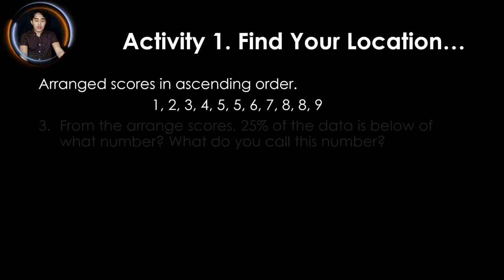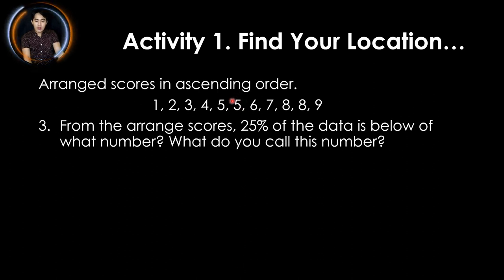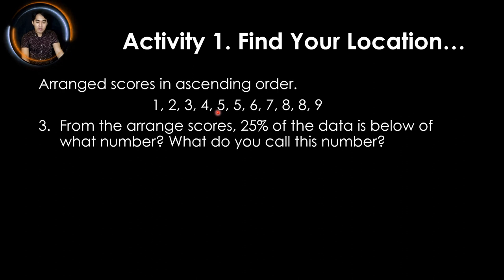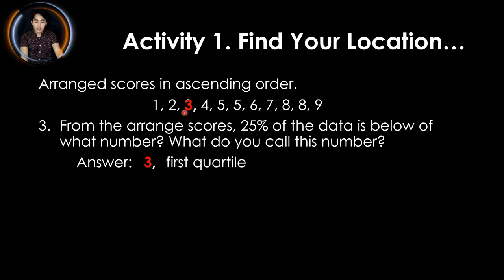For task 3, from the arranged scores, 25% of the data is below what number? Since the second 5 is our 50% of the data, the 25% of the data is found in the lower half: 1, 2, 3, 4, and 5. The middle of that lower half is 3. So 3 is our 25% of the data, or what we call the first quartile.